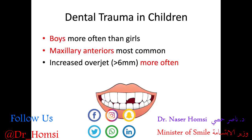Here are some great high-yield facts to know for the board exam. Boys are more often impacted by dental trauma than girls. The maxillary anterior teeth are the most commonly involved. And an increased overjet greater than 6 millimeters specifically has a higher risk of dental trauma, because the upper teeth are way out in front of the lower teeth, making them more vulnerable and more likely to be knocked into.